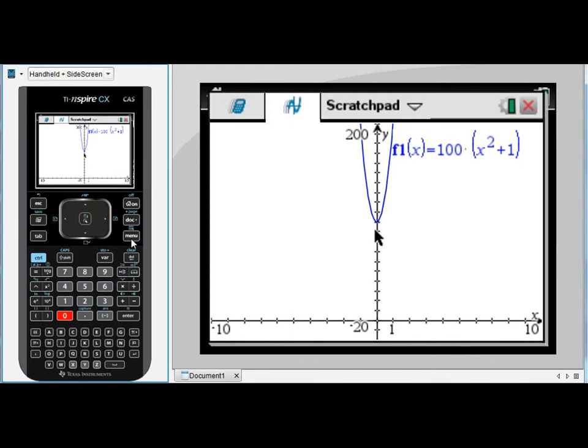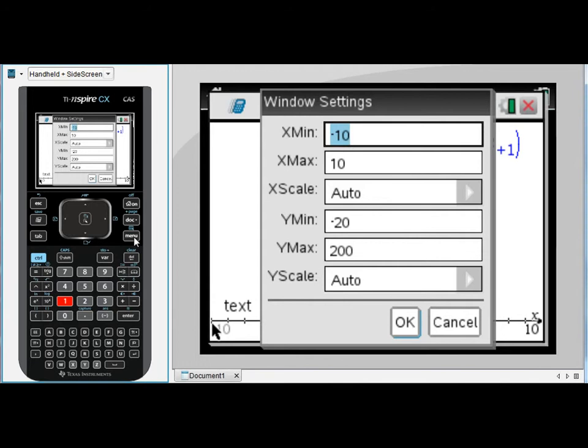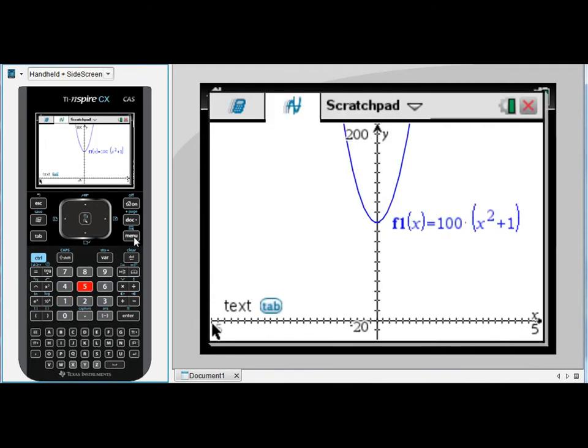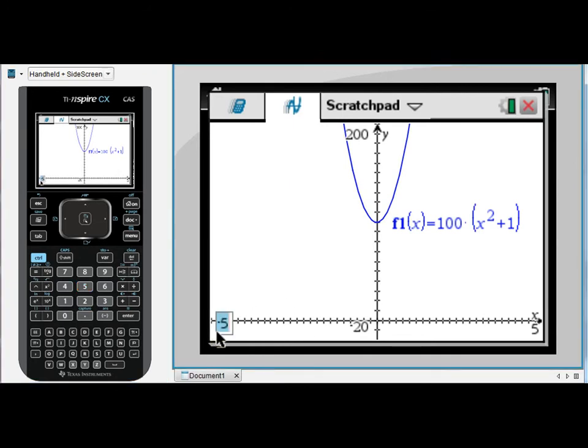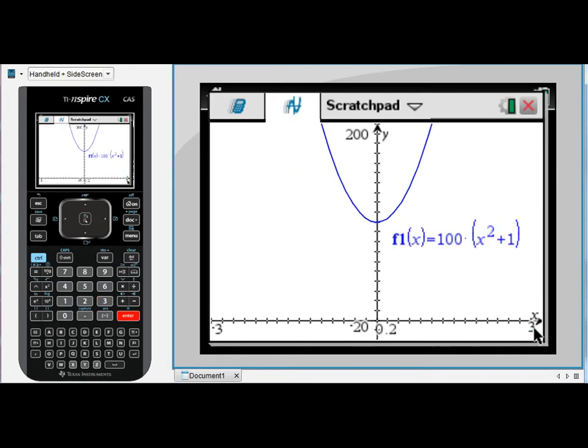So now I can see my graph. So also that dilation of 100 means that it's quite tall and thin, so I also might bring in these two numbers at the side. Again I can either do that by menu 4, 1 and make this negative 5 and 5, or you know you can adjust it simply by typing these numbers here.